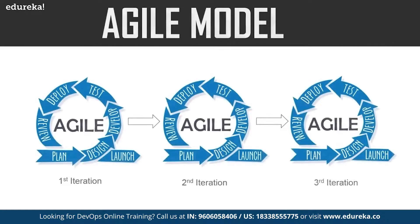The next model is the agile model. In this model, the software is broken down into various iterations, each with phases such as planning, design, development, and so on. The duration of each iteration is generally two to eight weeks. In the agile model, you release the software in the first iteration, gather feedback from end users, incorporate those changes into the second iteration, release again, and repeat the same procedure for subsequent iterations.